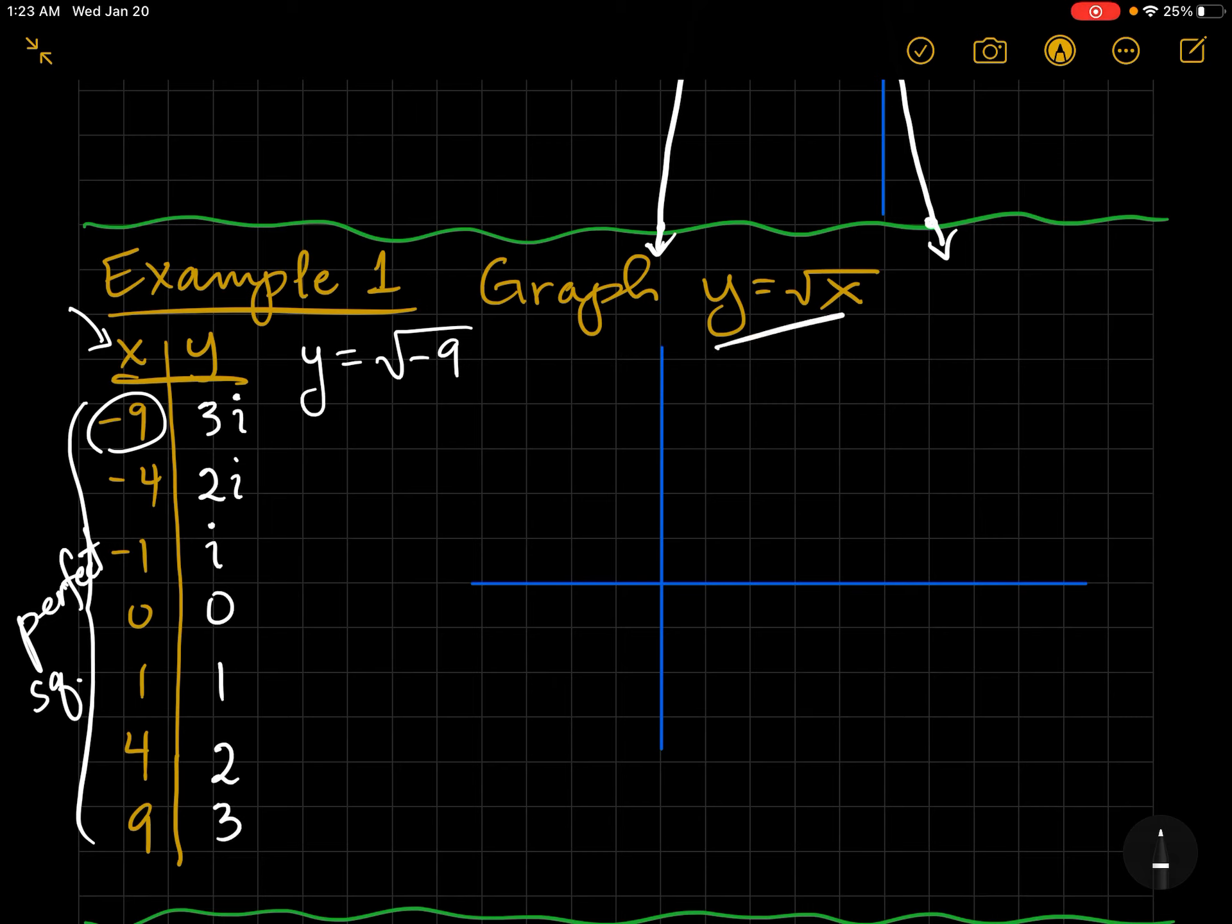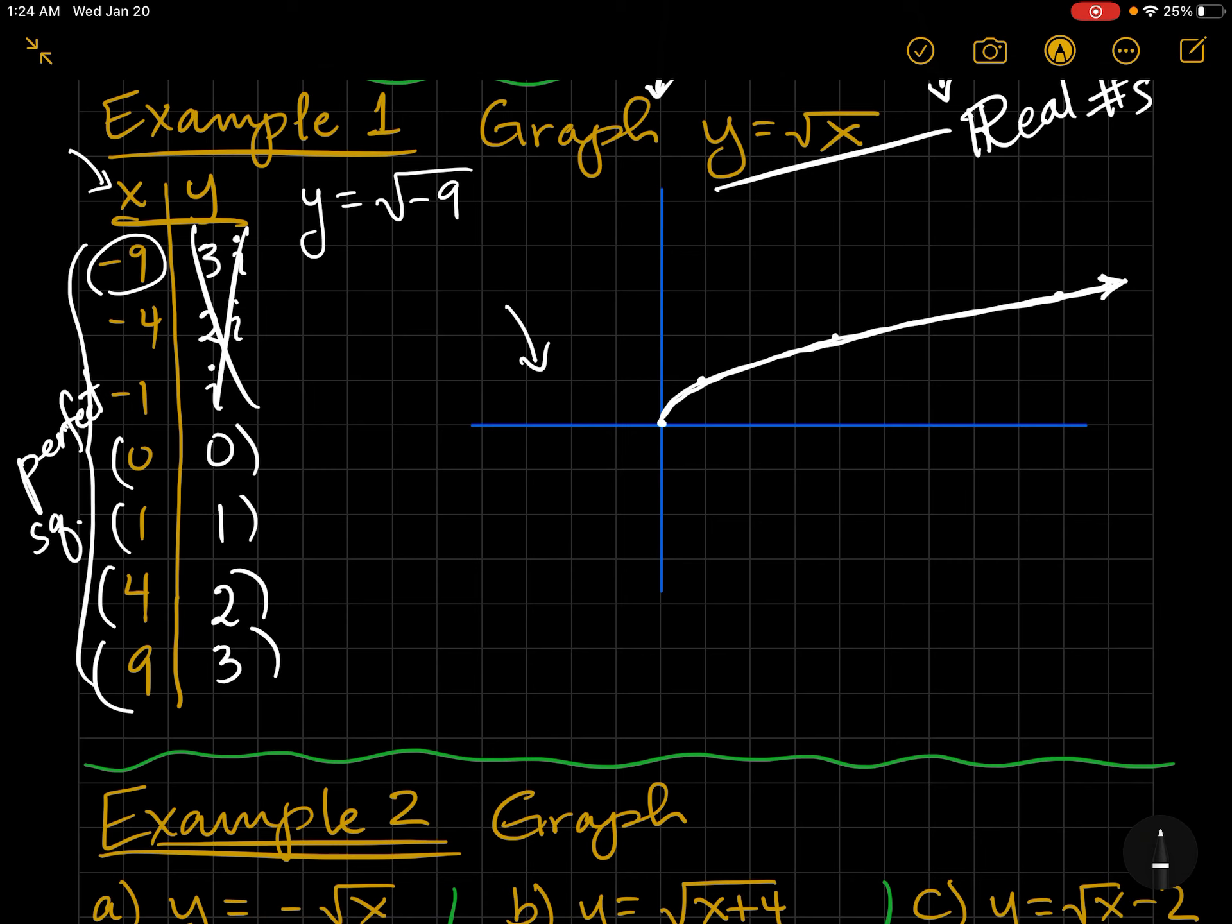Now, on this coordinate plane, we can only graph real numbers. So these don't exist on this graph. So if we graph these numbers, we'll see approximately where this graph is. And the first thing I hope you notice is that it's very similar to a parabola. It's actually flipped and rotated. And we're going to, in the next chapter, we're going to see that these are inverse functions and how inverse functions are related. Actually, you'll start to see that today. Notice there are no negative values back here. Let's go ahead and go to example 2.